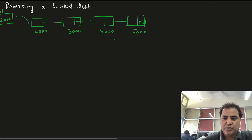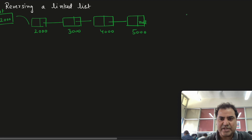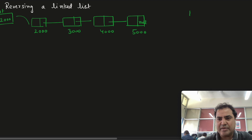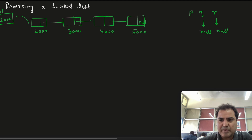We'll see how to reverse a linked list. I will be using three pointers — at least three pointers are required to reverse a linked list. I will name them p, q, and r. Initially p, q, and r are null.